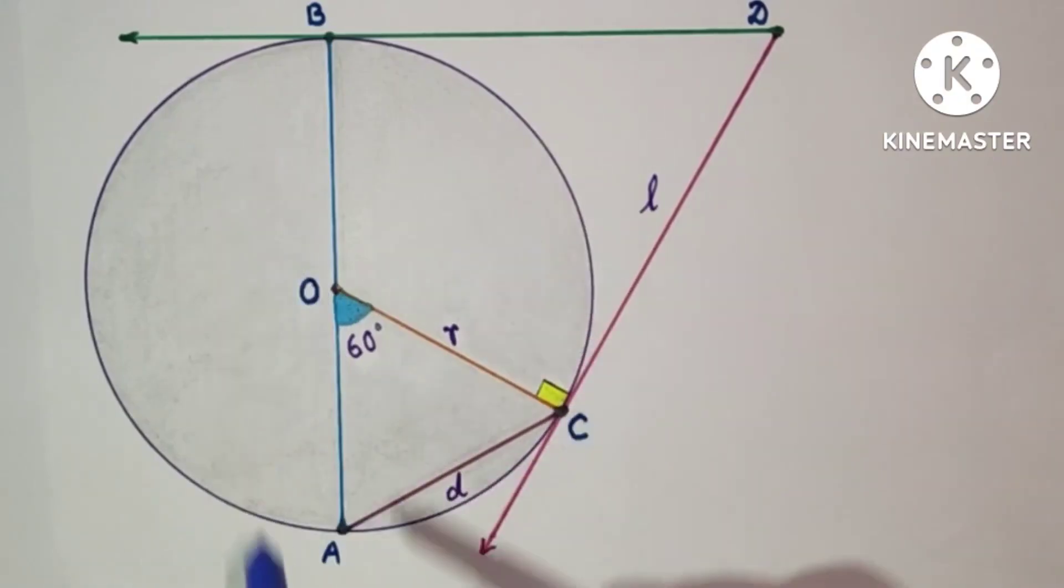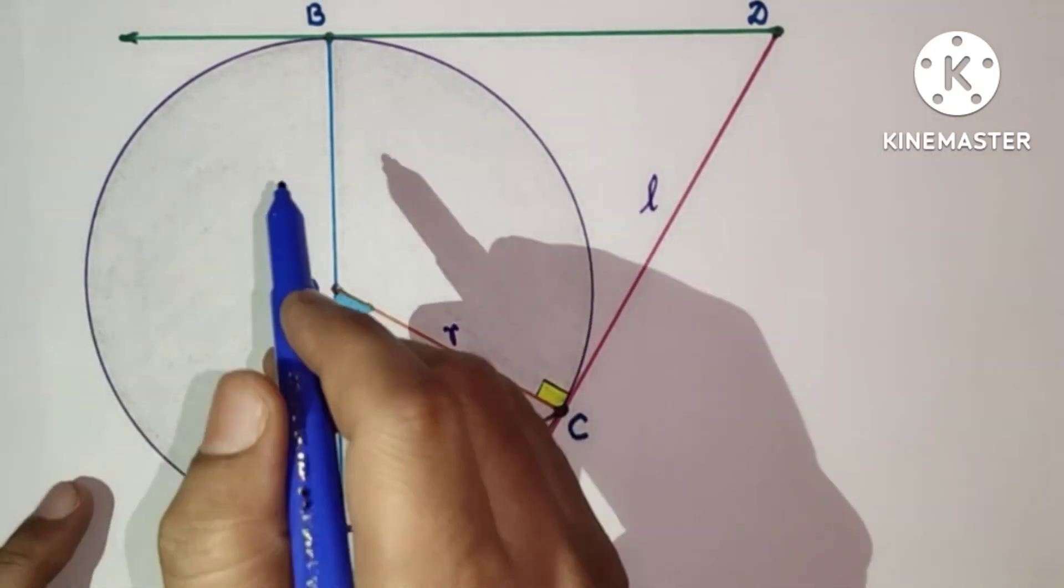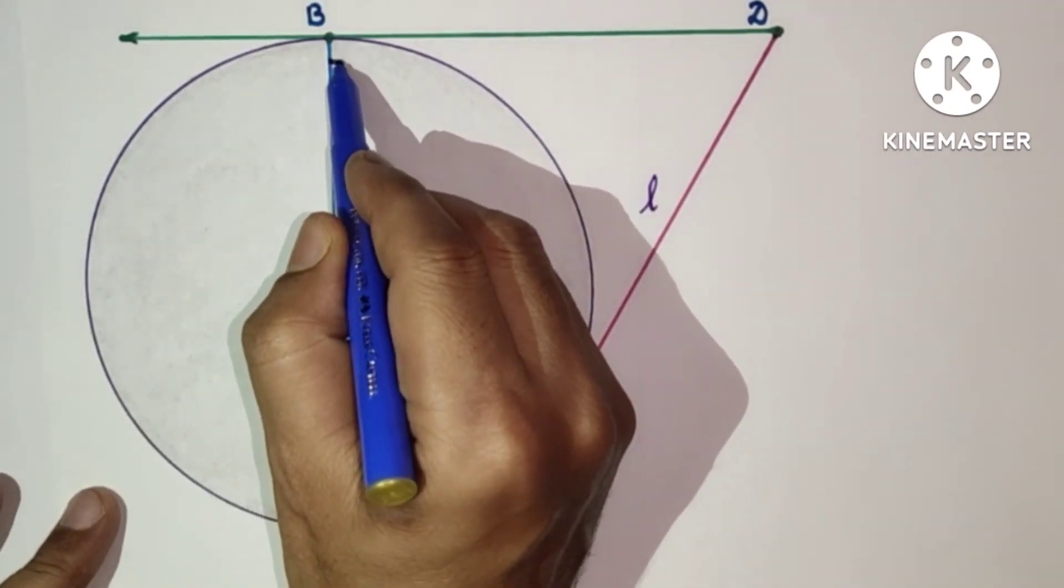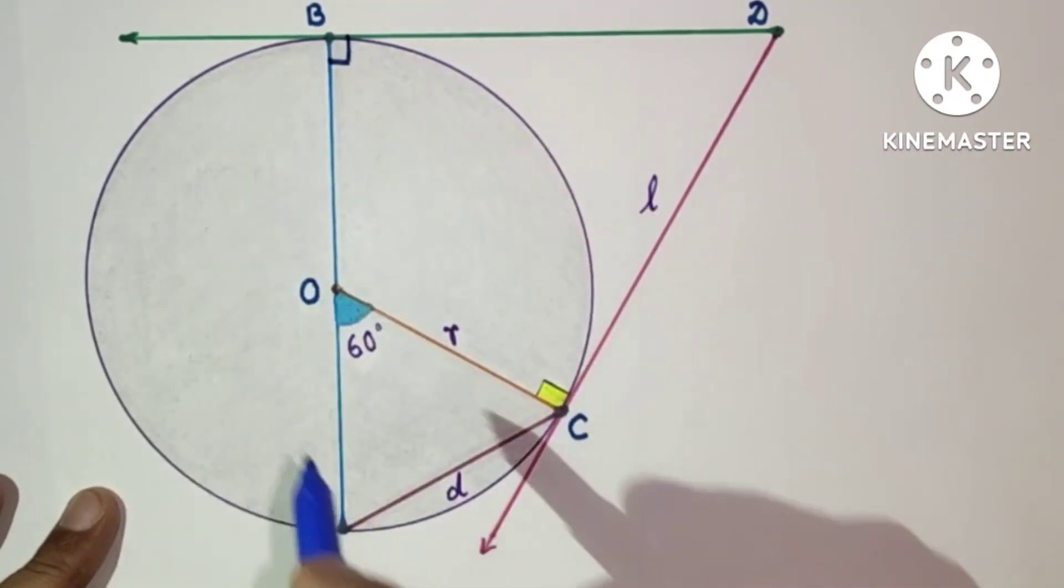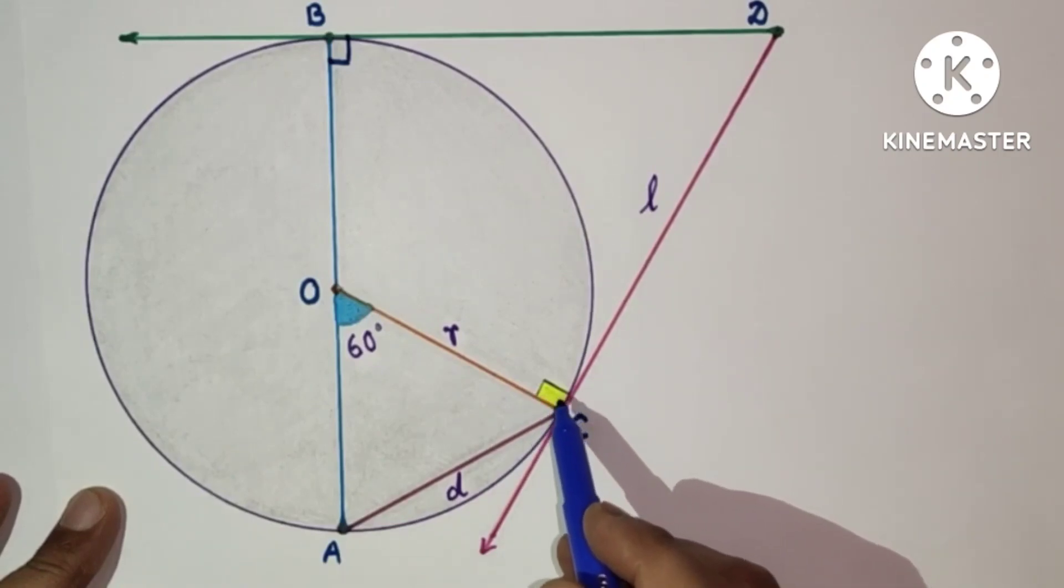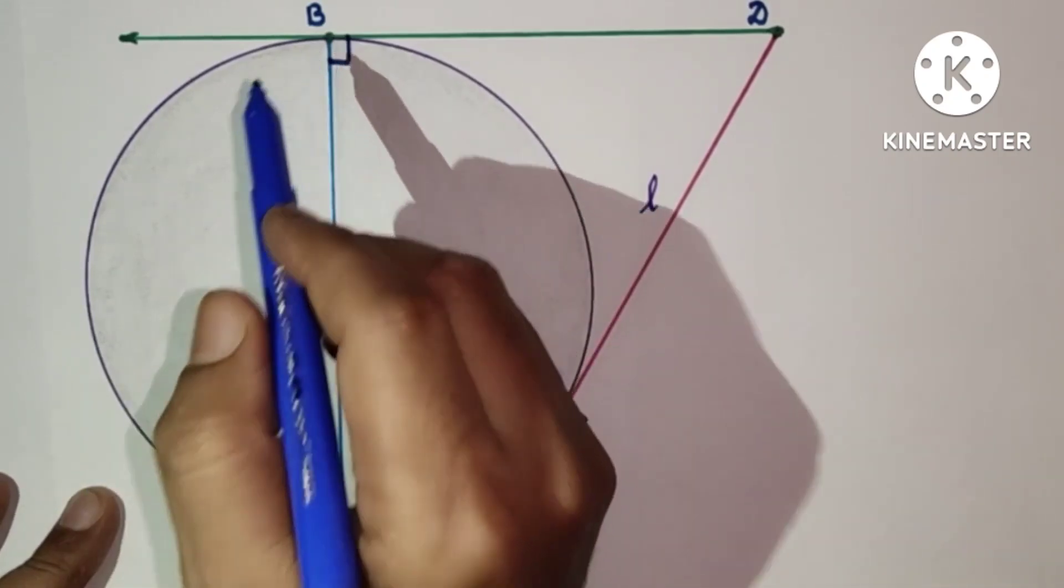This is diameter, this is tangent. Tangent touches diameter at B, so therefore this angle will be 90 degrees, as the diameter and tangent at point of contact will be perpendicular. Similarly, this is 90 degrees.